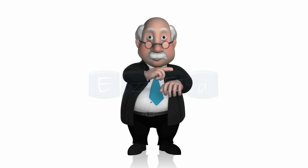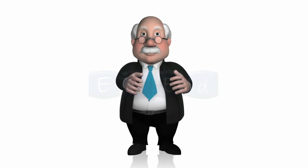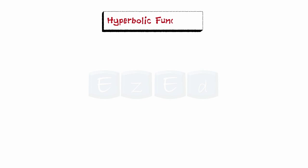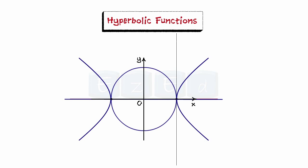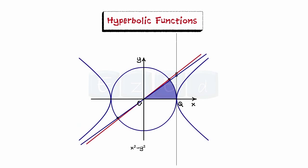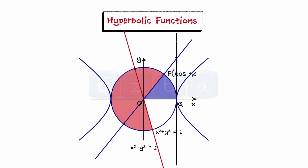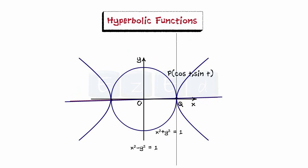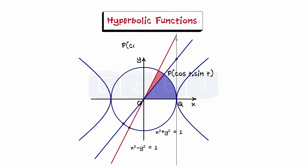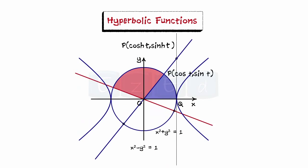Now you must be wondering why hyperbolic functions are called so. The identity cosh²x − sinh²x = 1 gives a clue. Just as the points (cos t, sin t) form a circle with unit radius, the points (cosh t, sinh t) form the right half of the equilateral hyperbola.